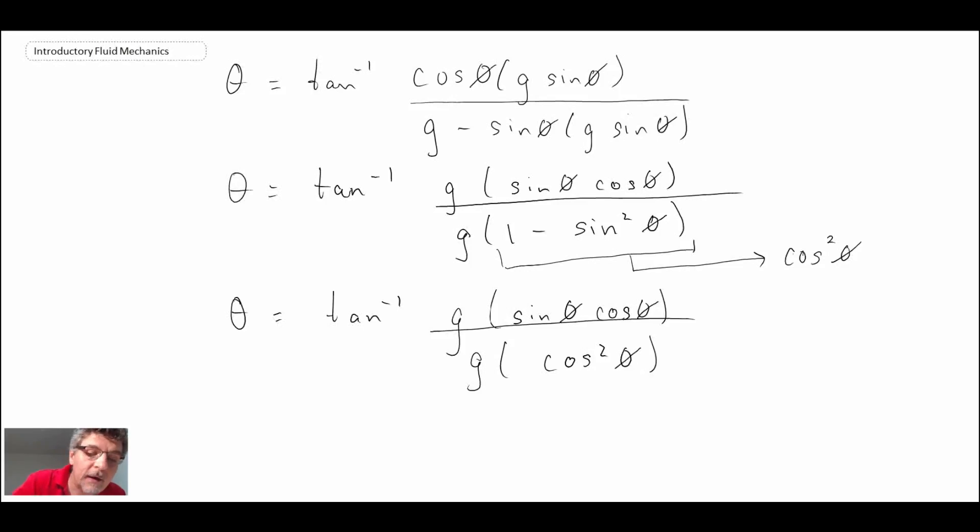Here the g's cancel out, we have a cos and a cos, so what we end up with is theta is inverse tan of sine phi over cos phi, which is the tan of phi, and consequently what we end up with is theta is equal to phi.